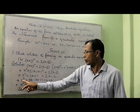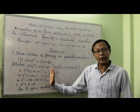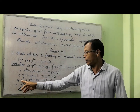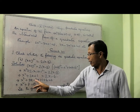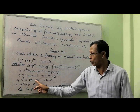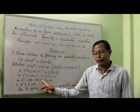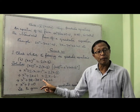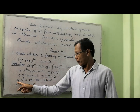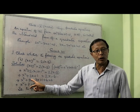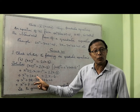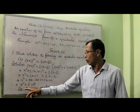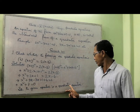Now I am bringing all the terms to the left side. It becomes x squared plus 2x minus 2x, then 1 on the left side and minus 6 comes from right to left becoming plus 6, equal to 0. From here, plus 2x and minus 2x cancel. The remaining is x squared plus 7 equal to 0. So the given equation is a quadratic equation.